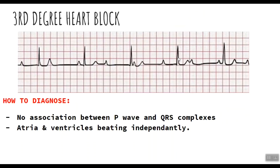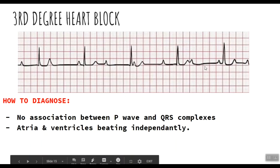Moving on to the third and most severe type: third degree heart block. In the ECG pattern of third degree heart block, there is no particular pattern and no association whatsoever between the P-waves and QRS complexes. For example, there is a lonely QRS complex without any P-wave behind it, and a lonely P-wave with no QRS complex next to it. This dissociation occurs because the atria and ventricles are beating independently of each other at their own pace.